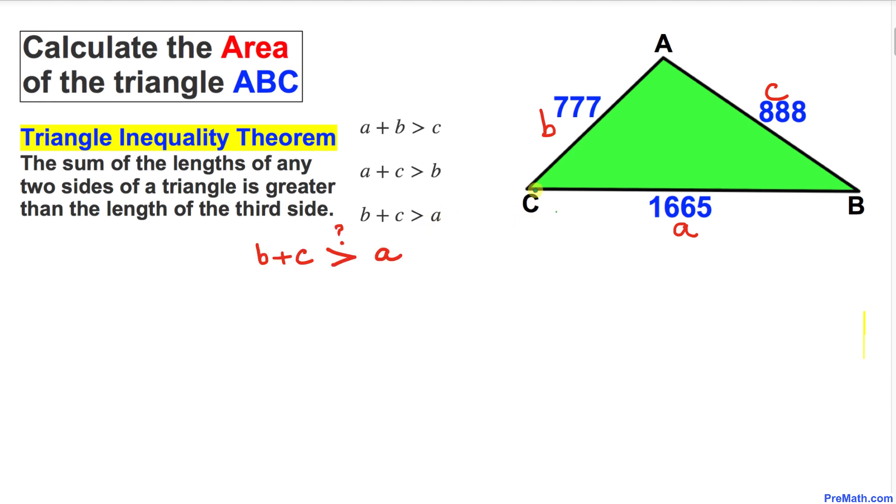Now in our case, let's focus on b plus c—is it greater than a? We can see that b plus c is not greater than a. They are equal in quantity, so that condition is not met. This means vertex A has to be on the line segment BC somewhere here.